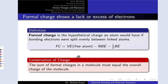We mentioned that one of the reasons boron prefers to have fewer than eight electrons is to maintain a neutral charge at the boron atom. What we're going to do now is introduce a concept that allows us to assign a charge to each atom within a Lewis structure. It's called formal charge, and it is the hypothetical charge that an atom would have if all of the bonding electrons in the molecule were split evenly between the two atoms involved in the bond. To calculate formal charge, we mentally split each bond and count the number of electrons around each atom, comparing that to the number of electrons in the free atom when neutral.